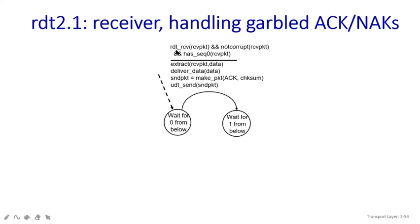Now, you have to receive the packet. If it is not corrupt, then check the first sequence — which is call zero. You are going to receive the first sequence, then extract the received packet data according to the algorithm. You extract the packet, get the data, and then send the packet with an acknowledgement.